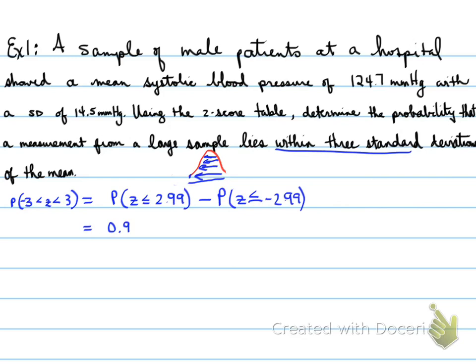We're proving it here. The probability of z ≤ 2.99 is 0.9986, minus the probability of z ≤ -2.99, which is 0.0014. When I subtract these two, I get 0.9972.